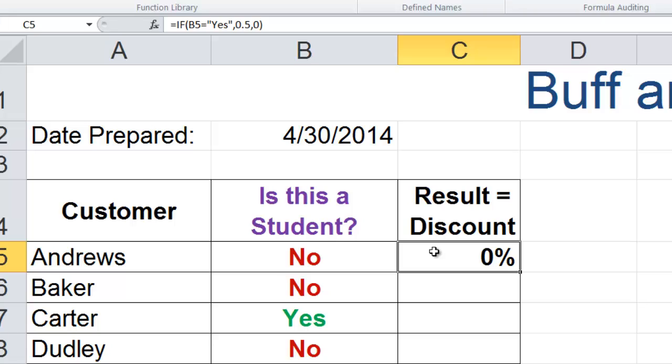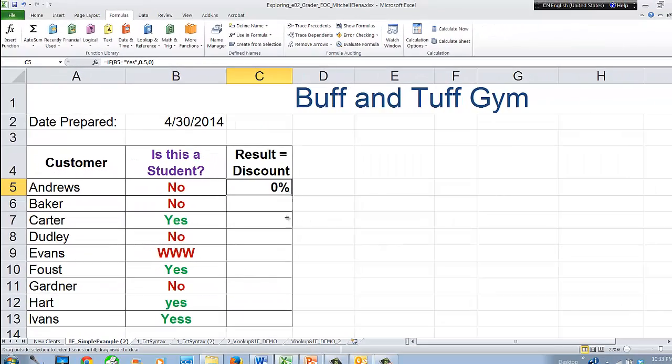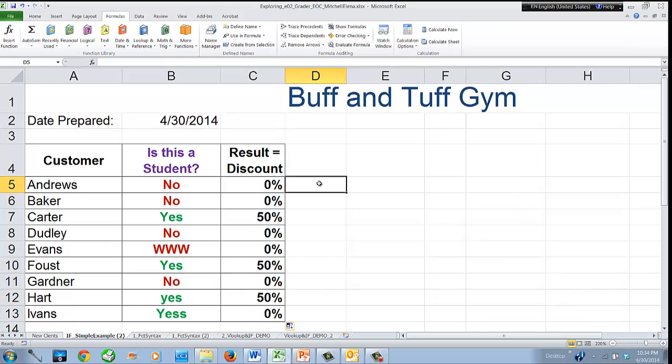All that remains to be done now is to copy the formula for the rest of the customers. Notice that the customer Evans, which has a www under Is this a student, will not receive a discount, as anything else but yes will receive a zero discount. Also, notice that even the customer Evans, who is a member, will not receive a discount. This is because the word yes is spelled incorrectly, and the text value is different than what Excel compares it against.